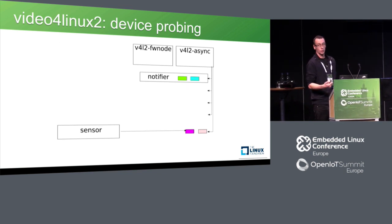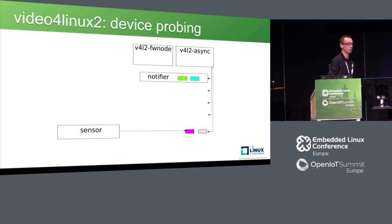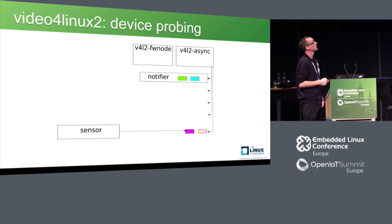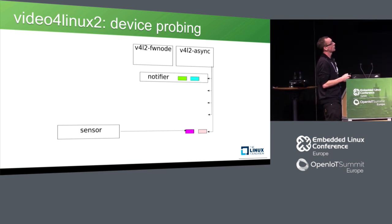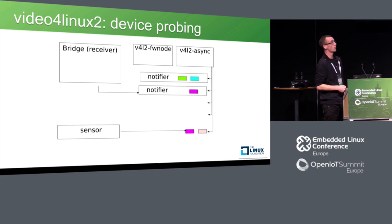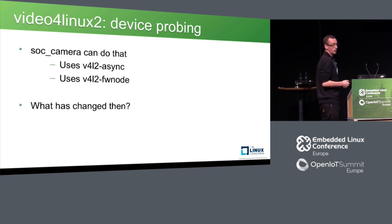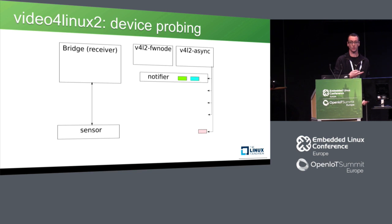That was the situation where the bridge driver probes first, but we wanted to solve the asynchronous probing problem. So if the sensor probes first, it uses V4L2 FW node to register its async sub-device, which gets added to the waiting list. Nobody is waiting for it yet, but at a certain point in the future, the bridge driver probes and registers a notifier waiting for this device. The two of them get matched and connected. We effectively solve the async probing problem using those two frameworks.